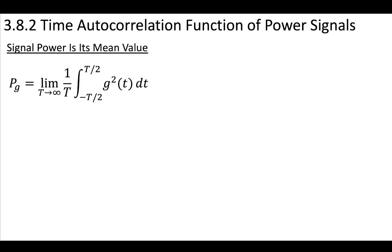Considering the time autocorrelation of a power signal, we can say that a signal power is its mean value. So we have this definition of the power of a signal.